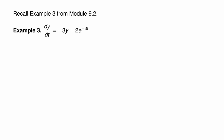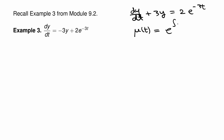As always, let's rewrite the differential equation in the form dy/dt + 3y = 2e^(-3t). Now I'll calculate the magic function mu. That's equal to e to the integral of 3 dt, so we'll use e^(3t) as our magic function. Now let's multiply both sides of the differential equation by the magic function.